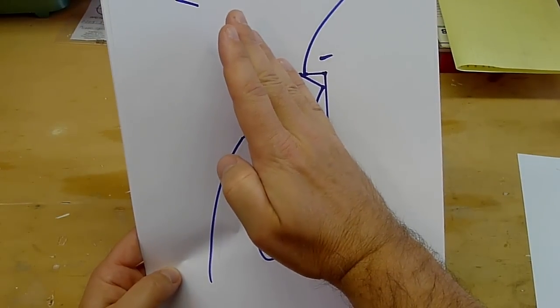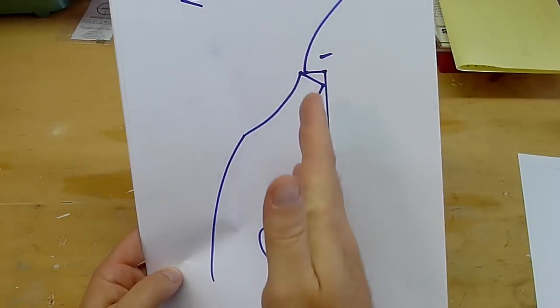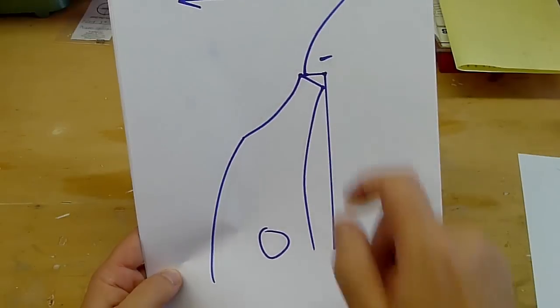You can see if this were super steep, those hooks would be coming this way, it would really want to shove the sear out of the way. This is a negative sear angle.